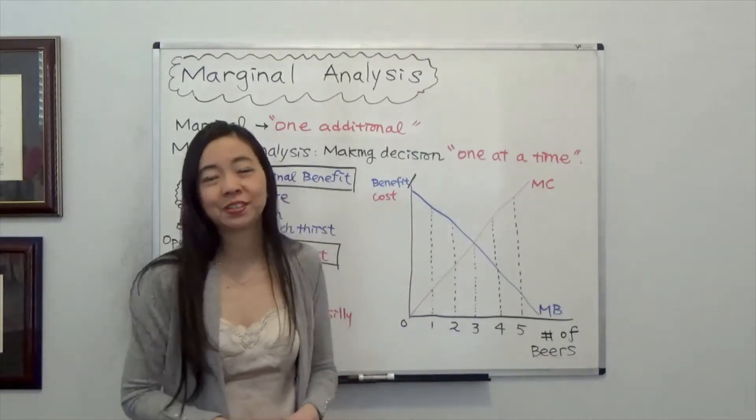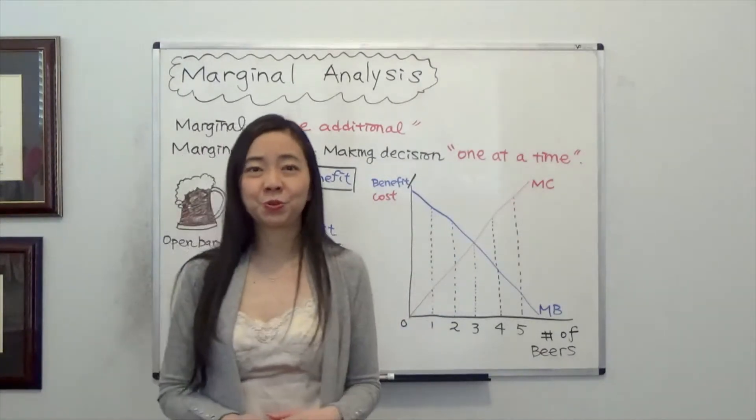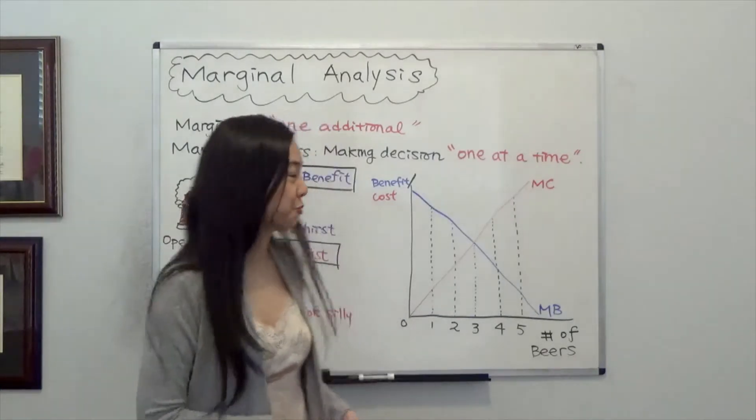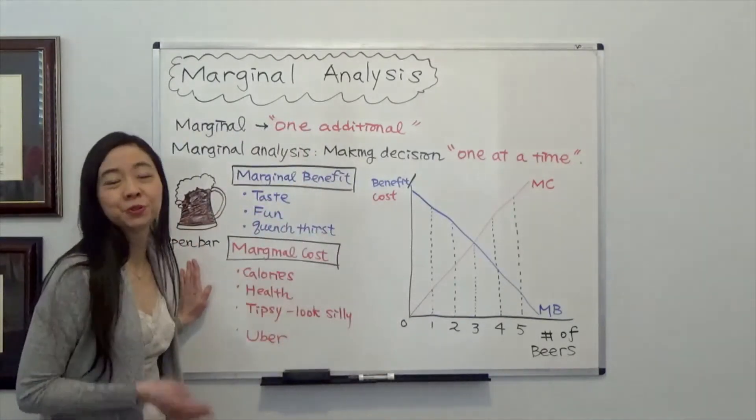So to illustrate, we're going to use an example. Suppose you're going to a friend's party and they have an open bar of beer. Now, suppose you're over 21.